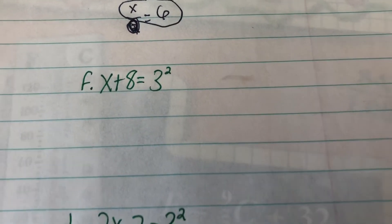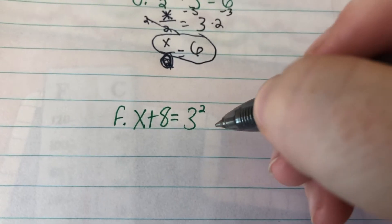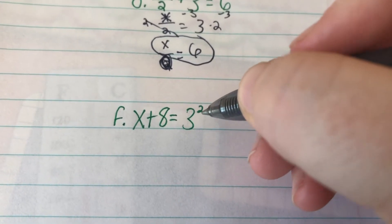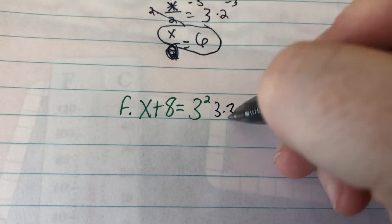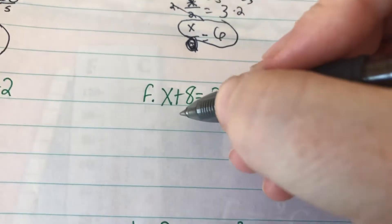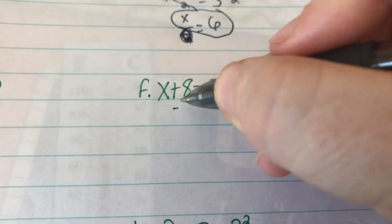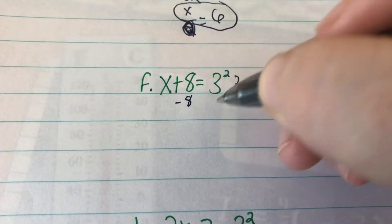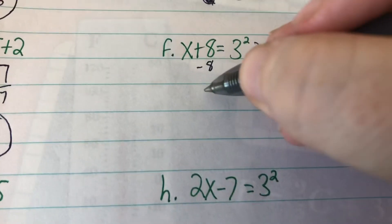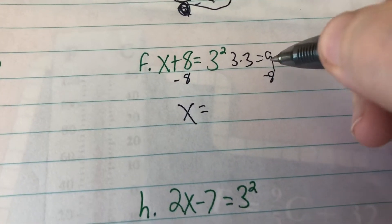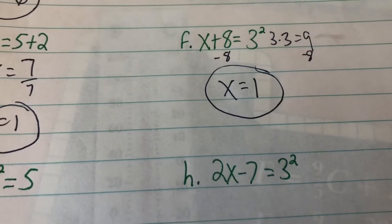On F, x plus 8 equals 3 squared. 3 squared — 3 times 3 equals 9. So x plus 8 equals 9. Subtract 8 from each side — minus 8, minus 8. x equals 9 minus 8, which is 1. So x equals 1.